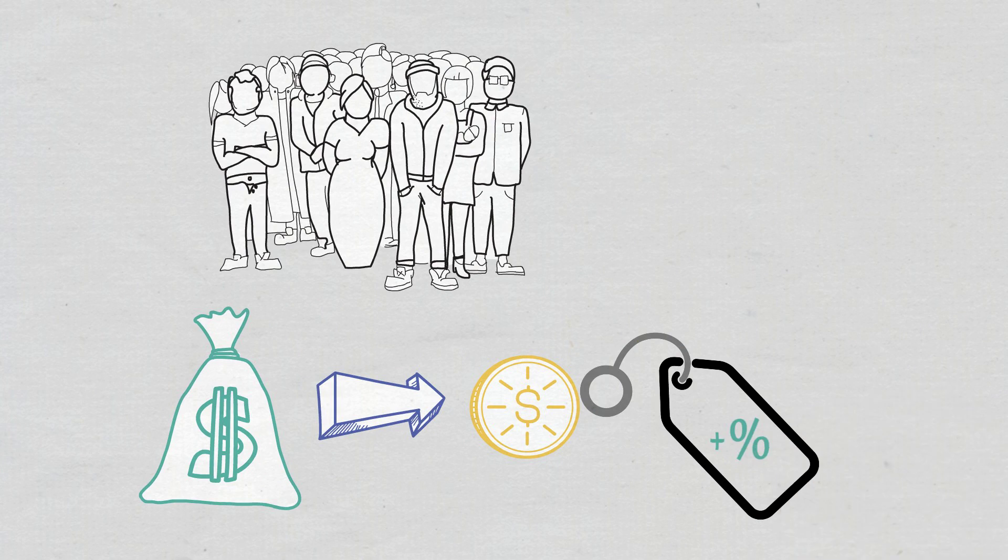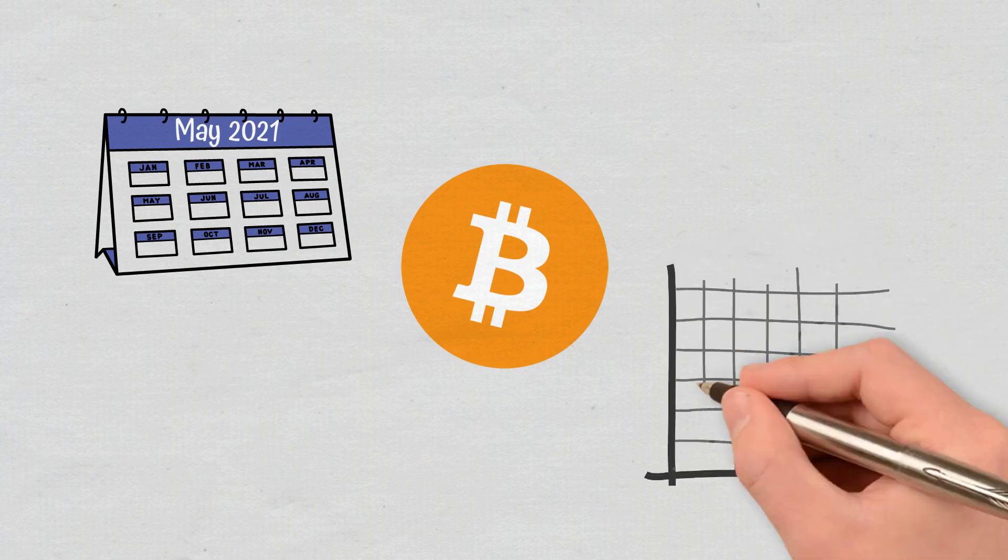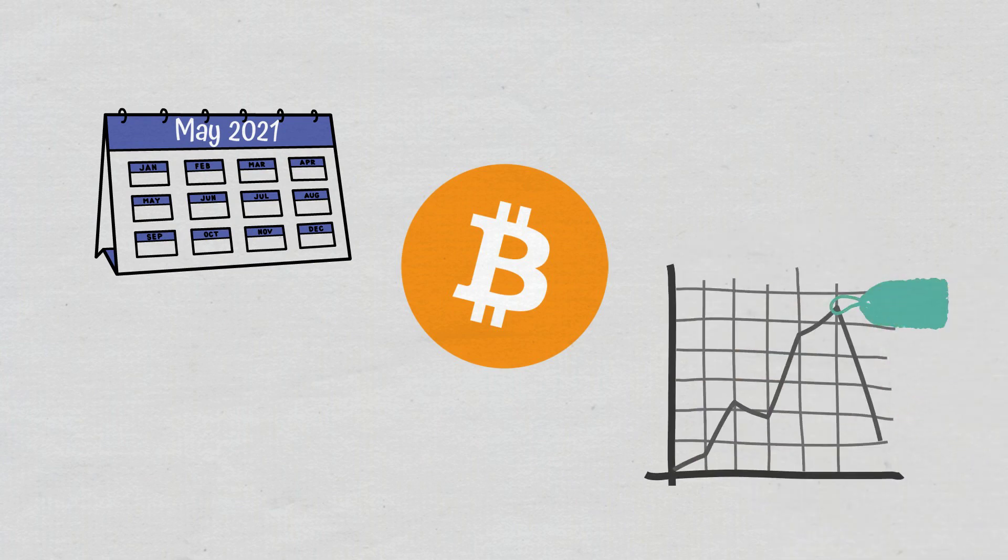For example, in May 2021, the Bitcoin Hashrate reached its all-time high, which is also when Bitcoin was at its peak price-wise. Due to different reasons, the value of Bitcoin began to fall as the Hashrate also fell.